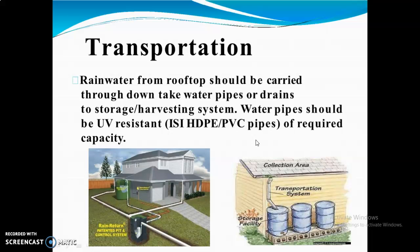Next is transportation. Rainwater from the rooftop should be carried through downpipe water pipes or drains to storage. Water pipes are used for the transportation of water from the roof to the storage tank. As seen in this picture, these pipes are used to transfer rooftop water to a storage tank. This PVC pipe is used for the transportation system, and here is the storage facility.